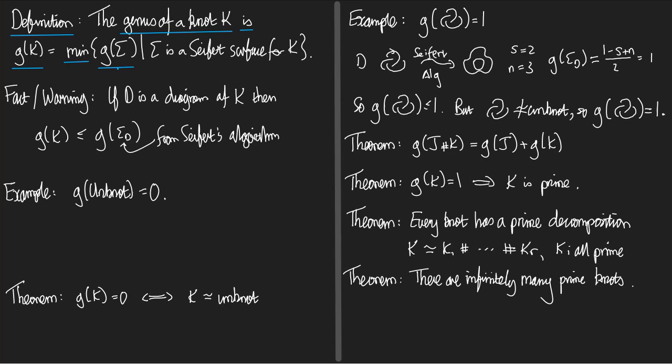The plural of genus is genera. So you take the minimum of the genera of the surfaces sigma where sigma is a Seifert surface for k. How do you compute the genus? Well, it sounds pretty bad. You've got to find all the Seifert surfaces for k and compute their genera, compute the genus of each one.